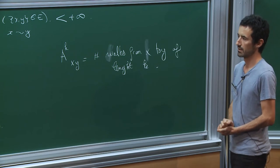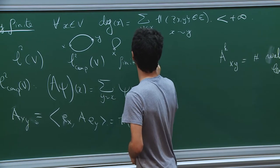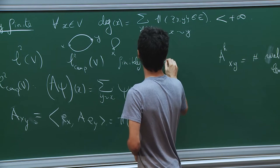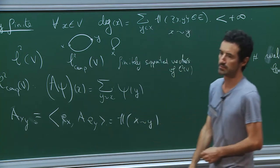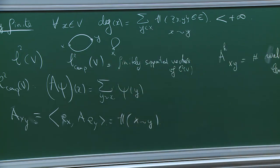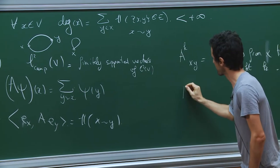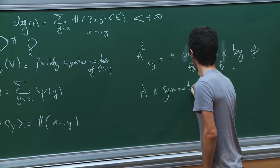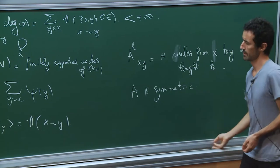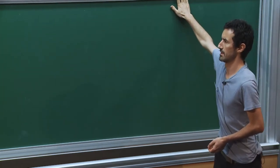The difference between L²_c and L² is that L²_c consists of finitely supported vectors of L² of V. And if my graph is simple, meaning there is no orientation of the edges, then A is symmetric.